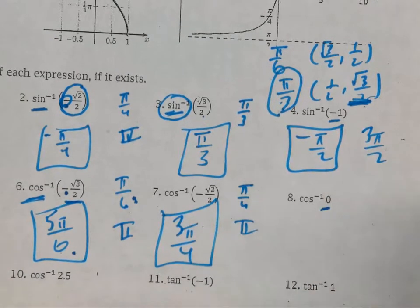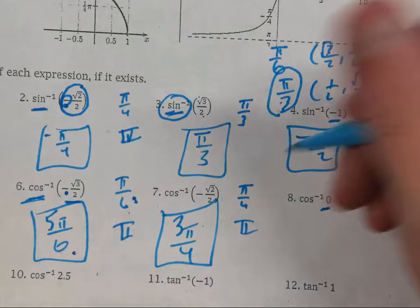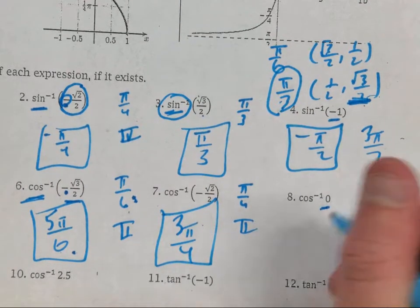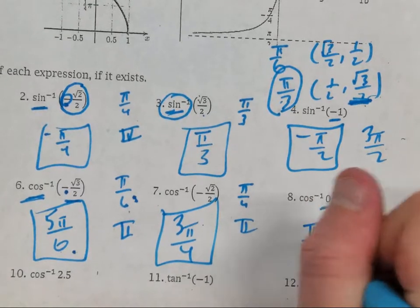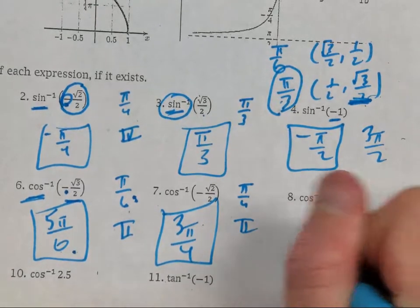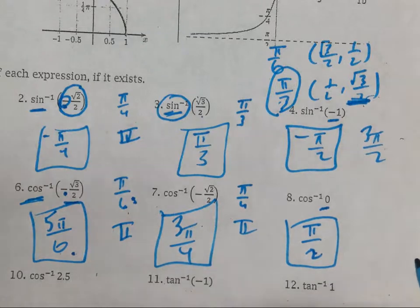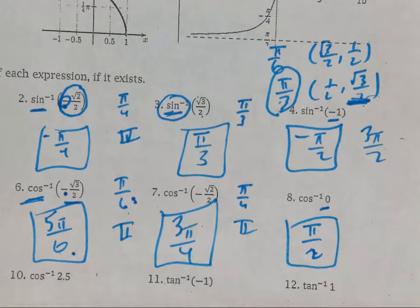Arc cosine of zero — is zero a major point? Yes. Remember, arc cosine is between quadrants one and two. Where is cosine equal to zero? Pi over two is your answer. Pi over two is fine because one-half falls between zero and one.